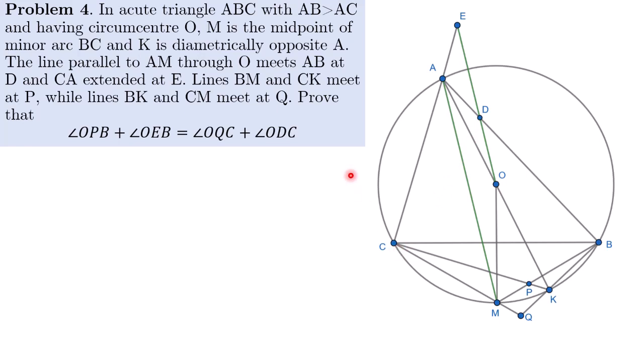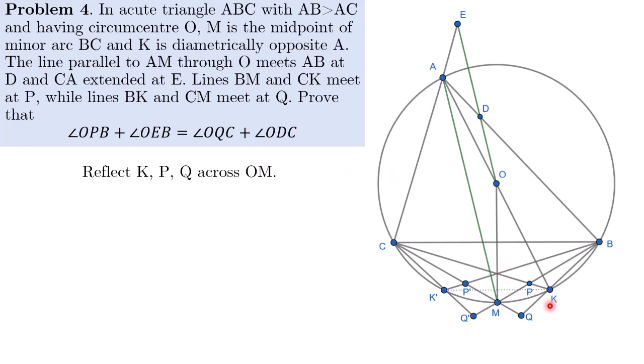So for this problem, the first thing we'll do is we'll reflect the points K, P, and Q across OM. So specifically, the way I'll do it is I'll reflect K across the line OM to the point K' and then BK' and CM intersect at P' and BM and CK' intersect at Q'.